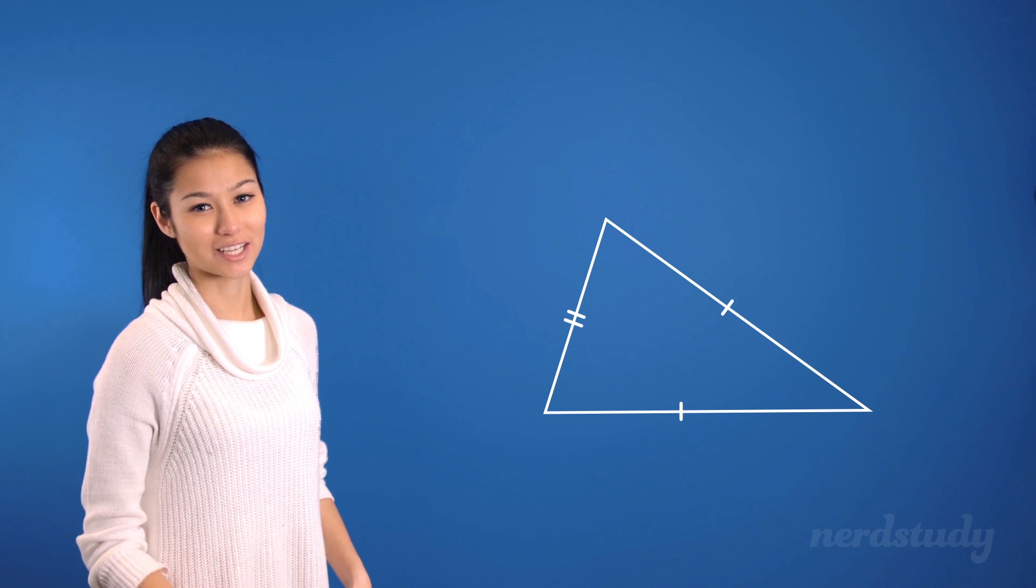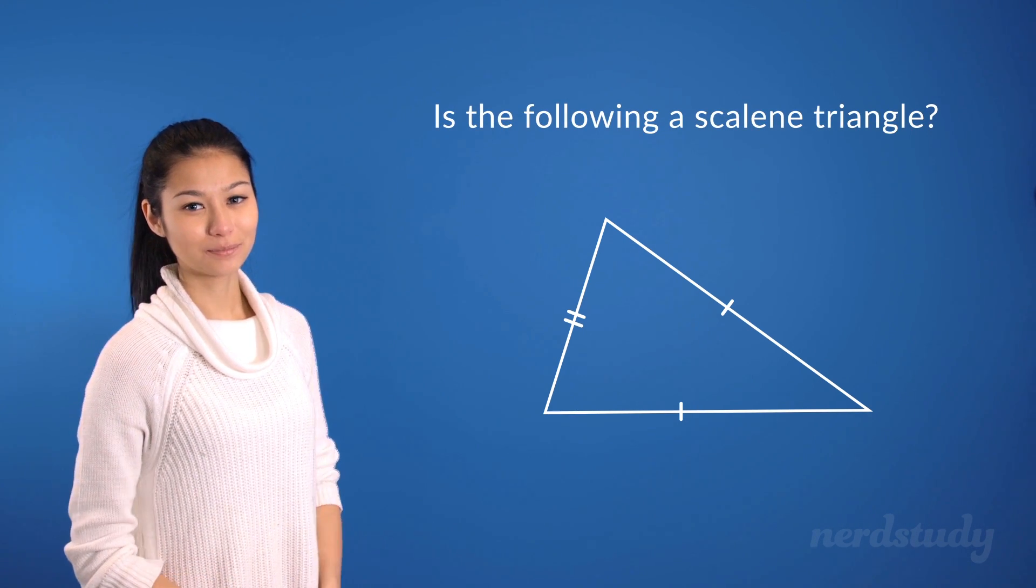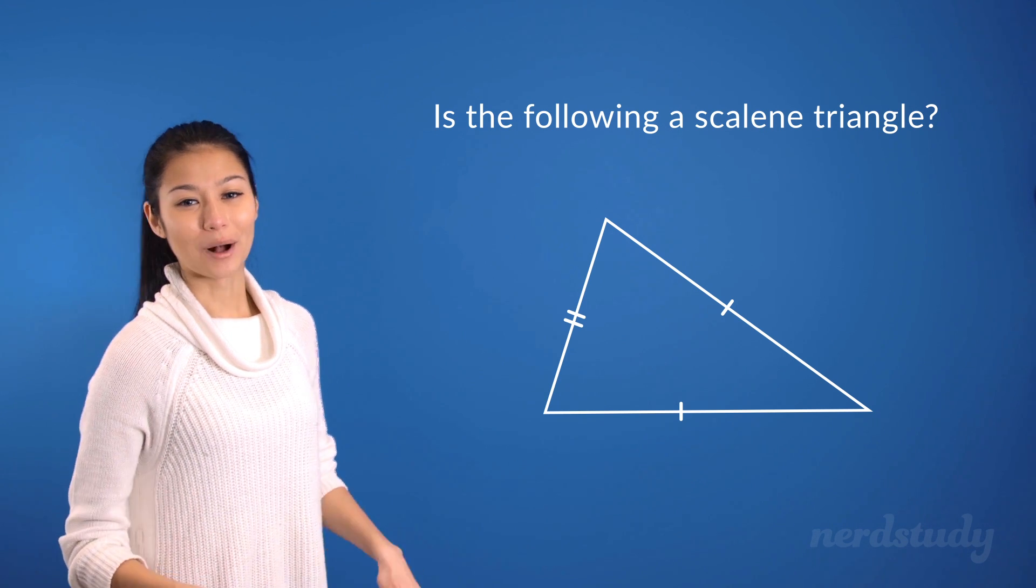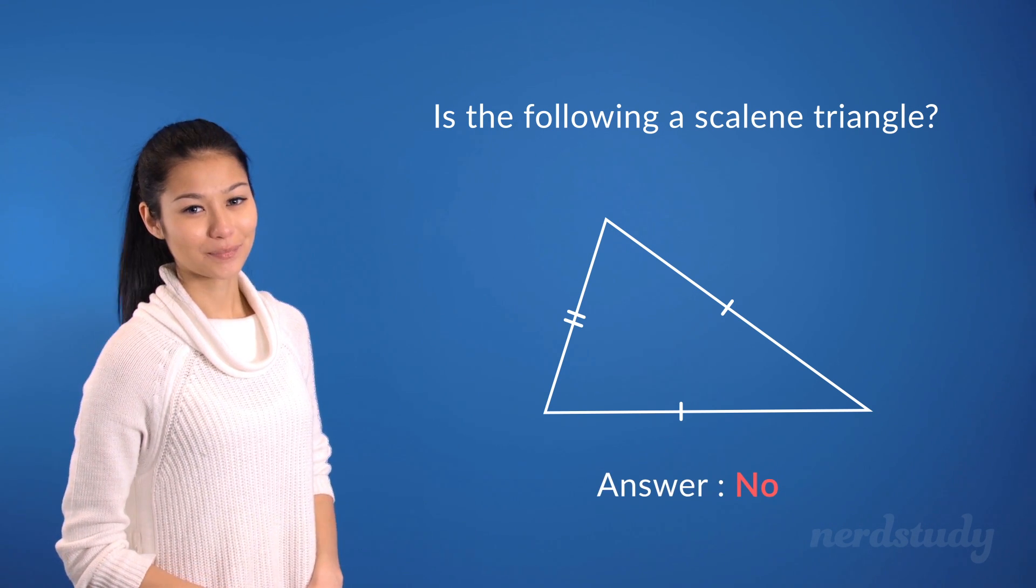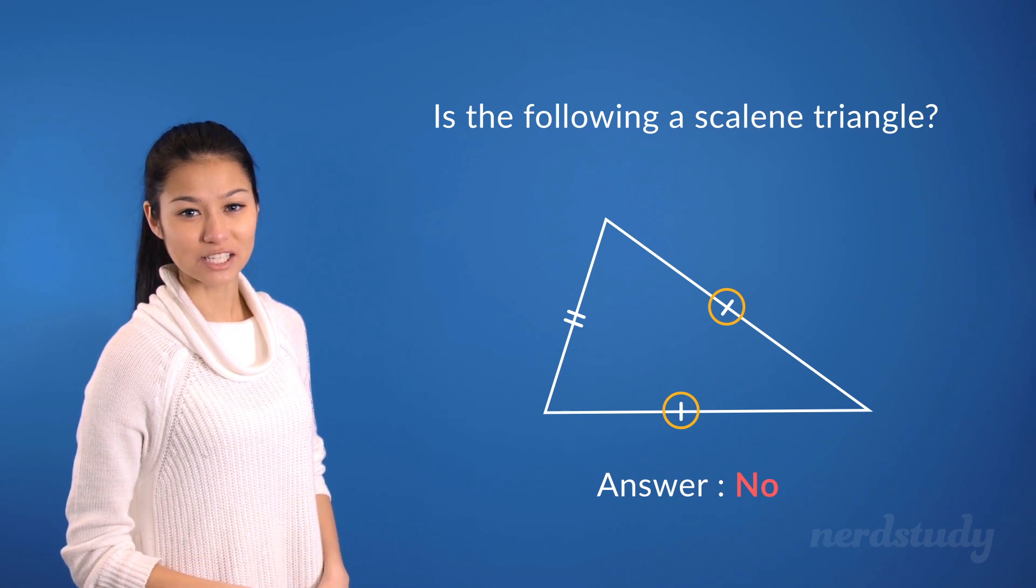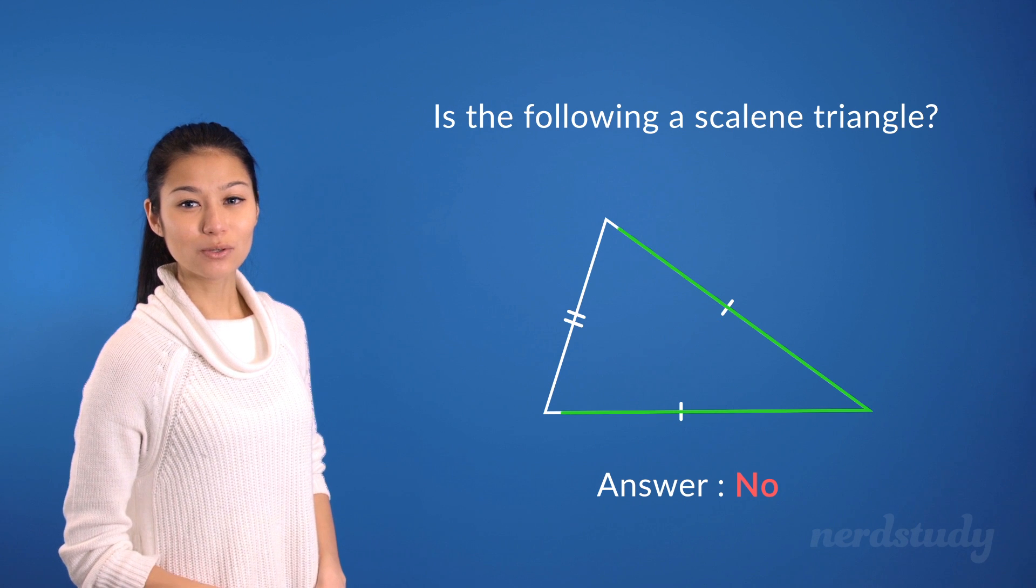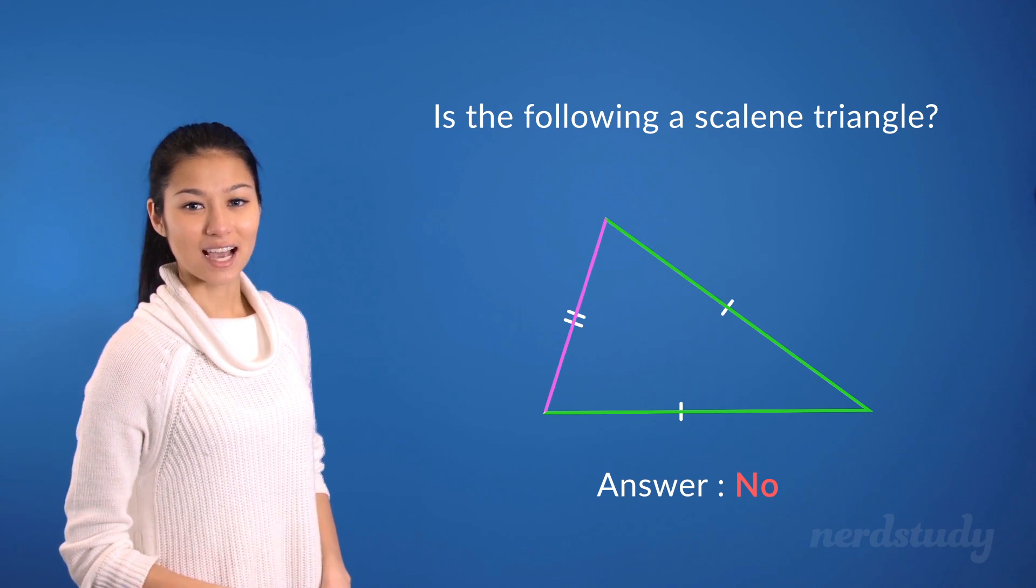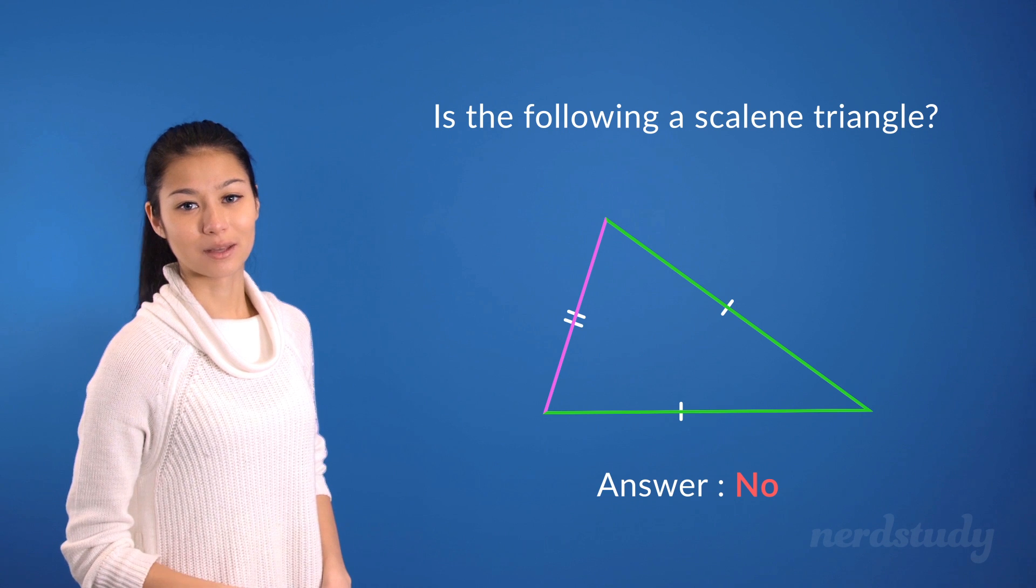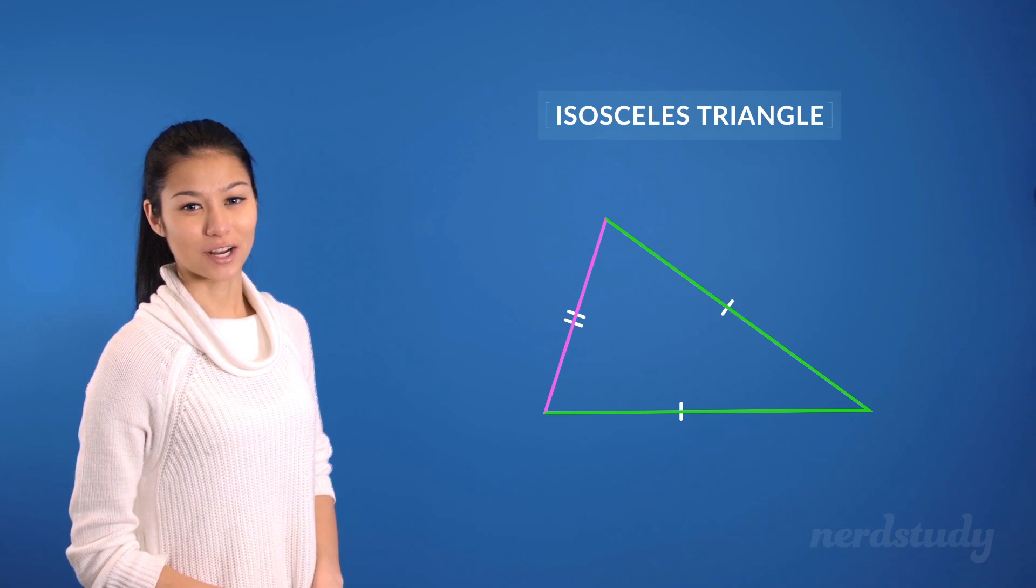Let's try an example of a question together. Is the following an example of a scalene triangle? Well, the answer is no. This is because since these two sides have one hatch mark each, without any actual values, we can know that these two side lengths are equal to each other, and that this side is not equal to either of them, making it an isosceles triangle and not a scalene triangle.